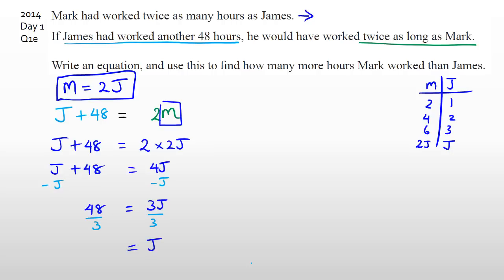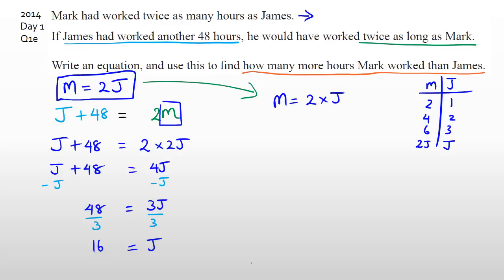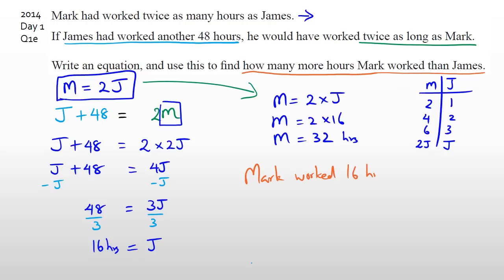I divide both sides by 3 because I want j by itself, and I end up with j equals 16. It's really important to go back to the question and see what they're asking — the question asks how many more hours Mark worked than James. So figure out Mark's hours first: m equals 2 times 16, which means Mark worked 32 hours. James worked 16 hours, so Mark worked 16 hours more than James.